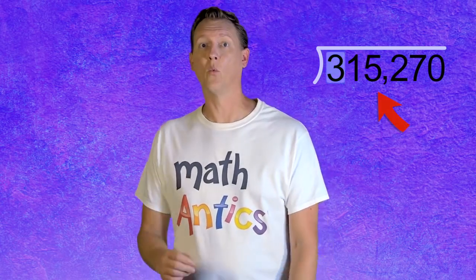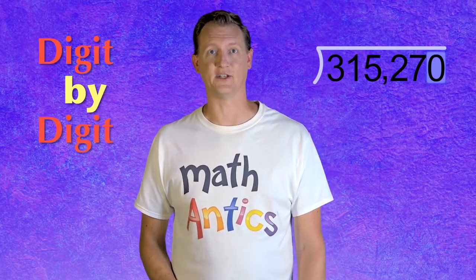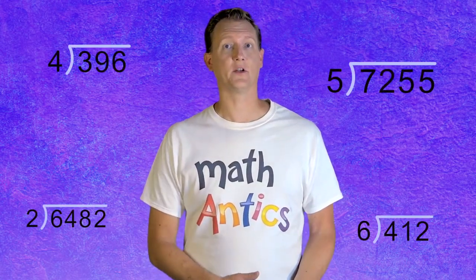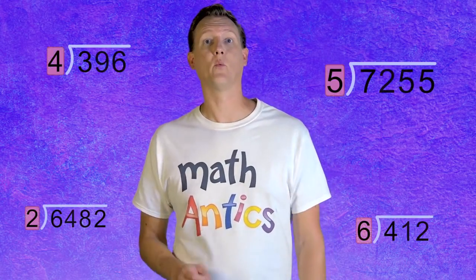The key was to break up a big division problem into a series of smaller and easier division steps. That involved trying to divide the dividend one digit at a time, digit by digit. And in the examples we saw, going digit by digit was pretty easy because we only had one-digit divisors.